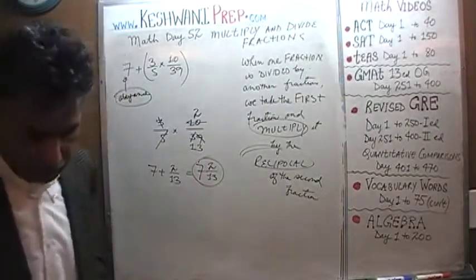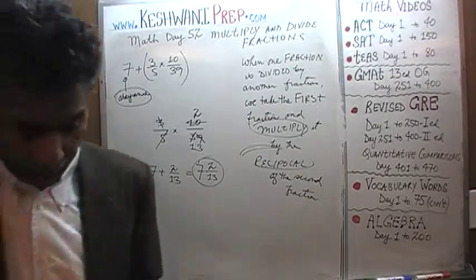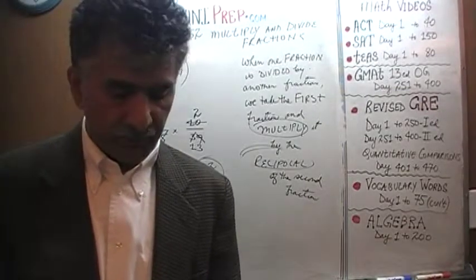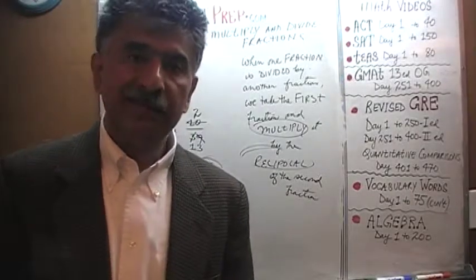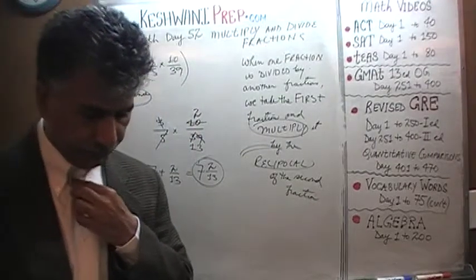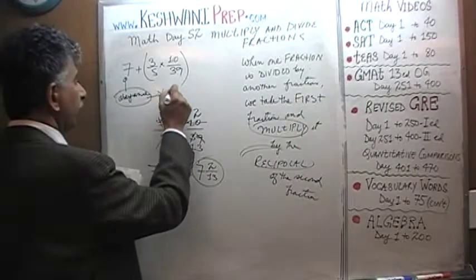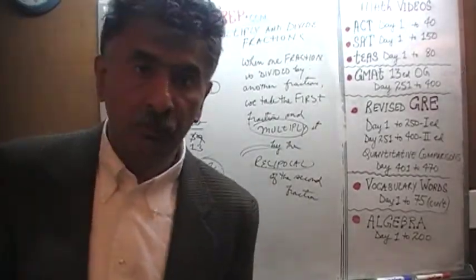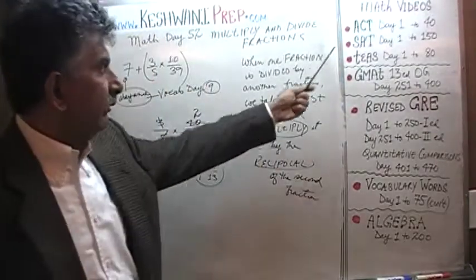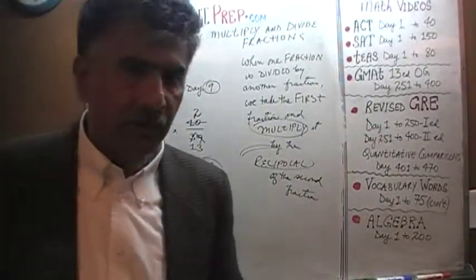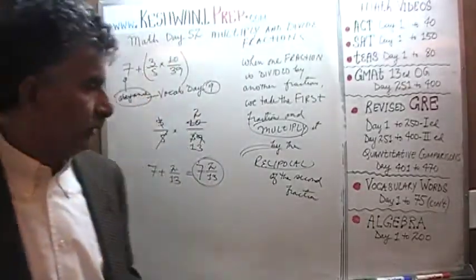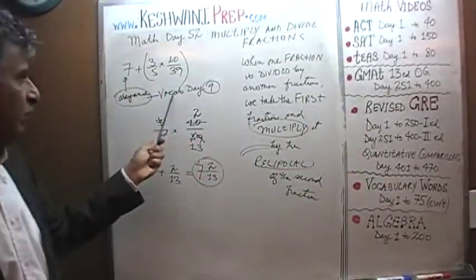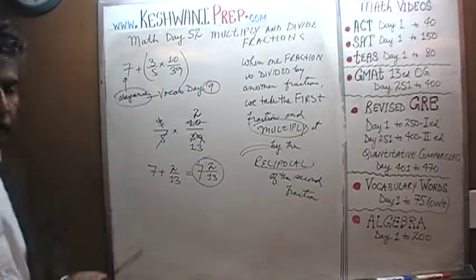The answer is simply 7 and 2/13. To keep something in abeyance means to keep it aside — we will deal with it later. We actually learned the word abeyance on vocabulary day 9. If you are preparing for tests like the SAT, GMAT, or GRE and want to improve your vocabulary, search for SAT vocabulary words or GRE vocabulary words day 9 and that video will come right up.